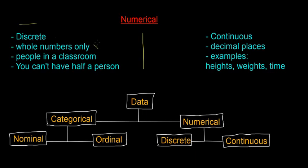So discrete can have whole numbers only, so examples of that would be, say, people in a classroom. So the important thing is you can't have half a person or a third of a person, you can only count in whole numbers. So people in the classroom, people at a football match, stuff like that.